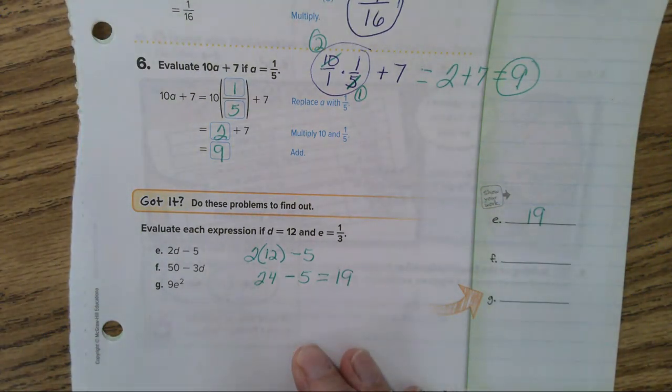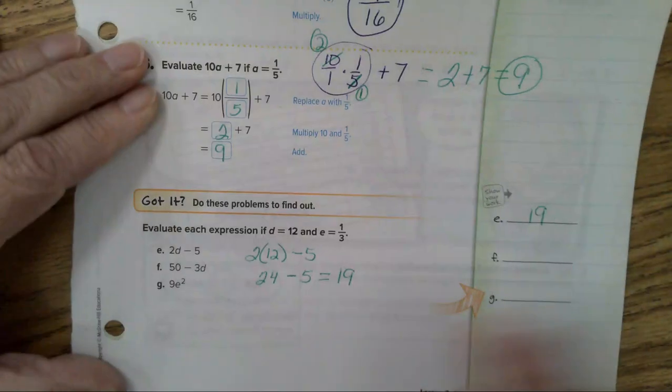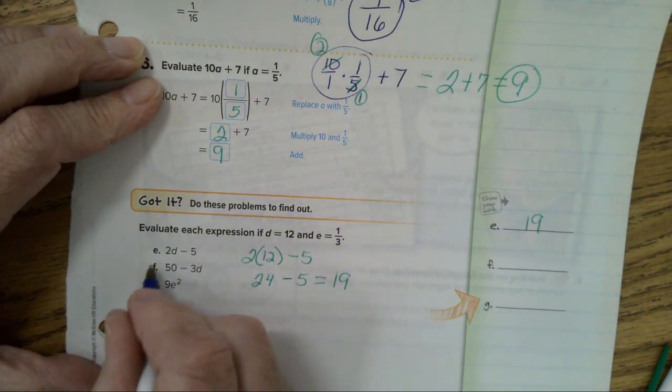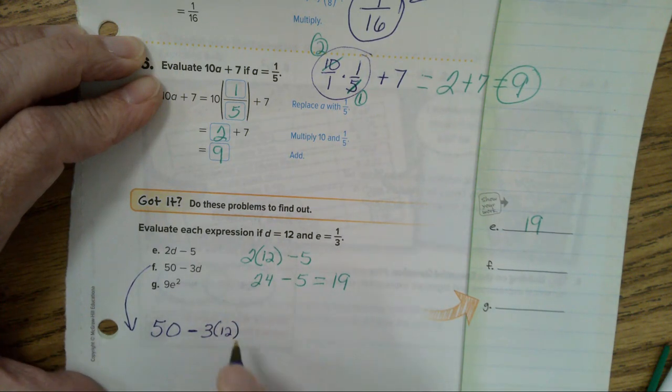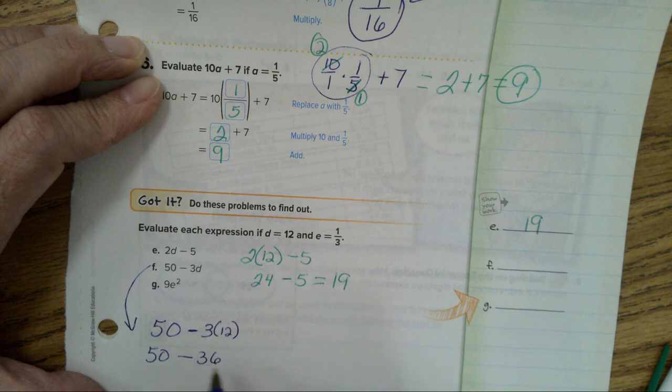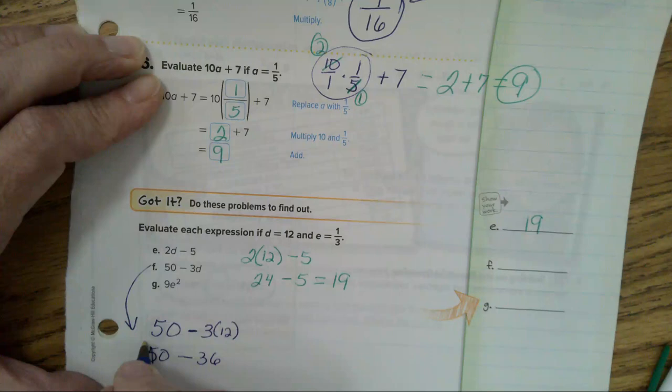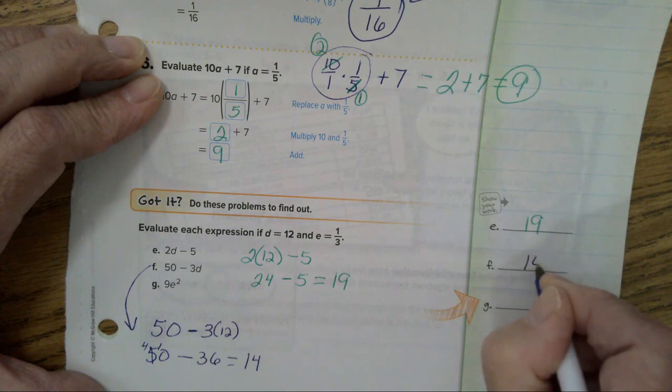Now, let's do letter F over here. 50 minus 3 times D, which is 12. So, that will be 50 minus 3 times 12 is 36. Now, 50 minus 36 will equal 14. The answer is 14.